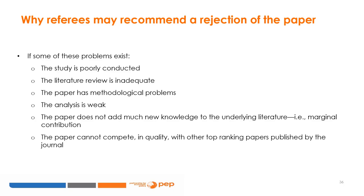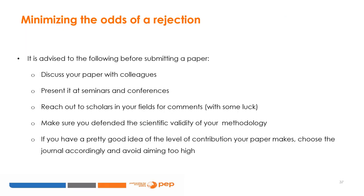A paper can be rejected for multiple reasons. Here are a sample of them: an inadequate review of the literature, inappropriate citations, an unclear introduction, ambiguous research questions, flaws in the methodology, a poor writing style, the paper does not add new knowledge to the underlying literature (for example, it makes only a marginal contribution), and the paper cannot compete in quality with other papers published by the journal. In preparing your paper for submission, you want to make sure it does not display any of these problems.